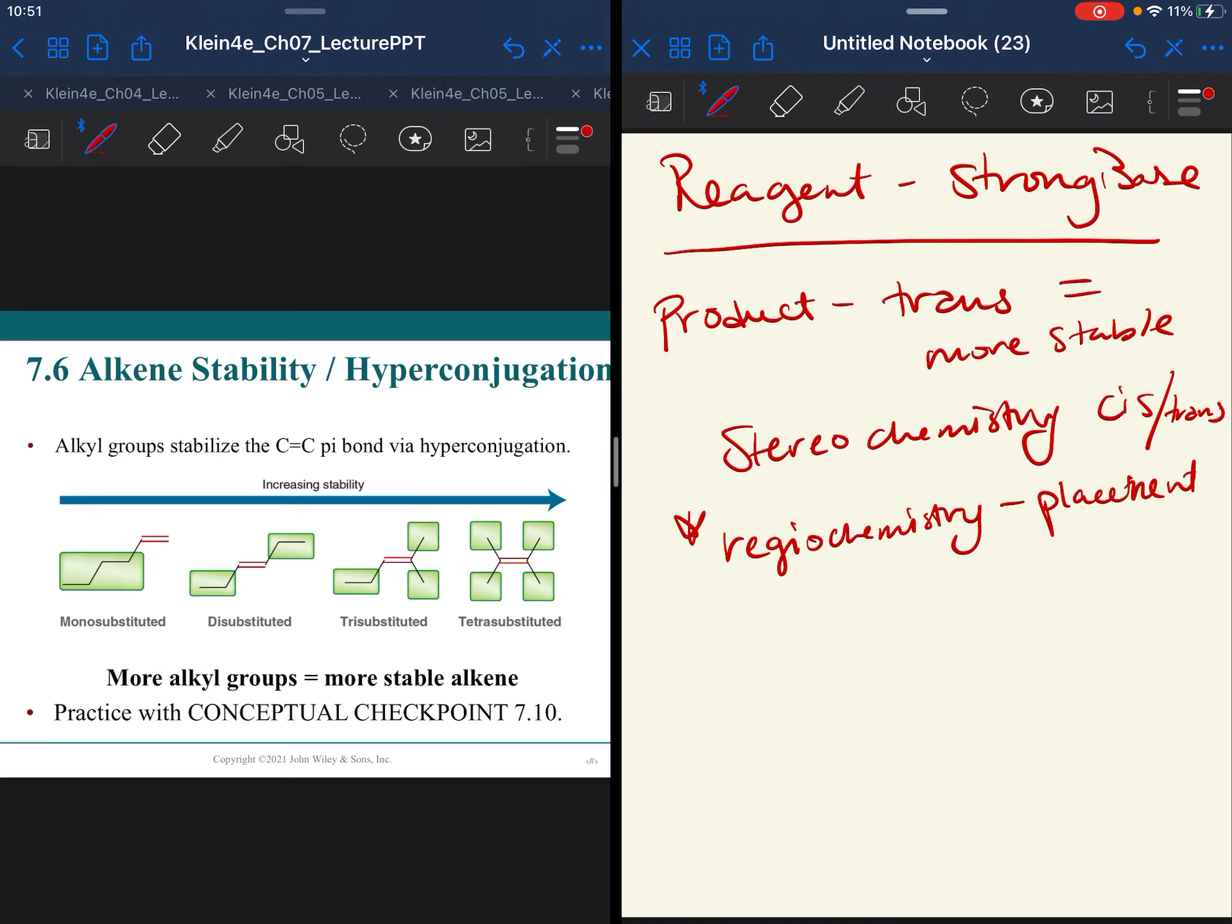Okay, to discuss regiochemistry, what we need to think about is a substitution pattern. So when we look at a double bond, there are four positions.